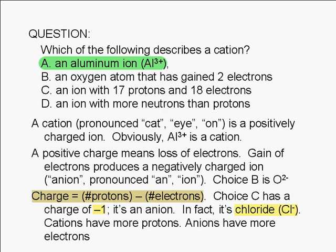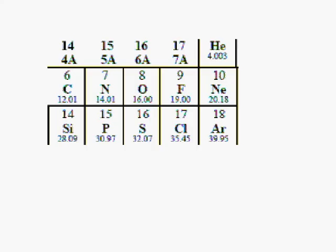If you're wondering how we figured out that choice C describes a chloride ion, here's how it's done. We refer to the periodic table. Here's chlorine. Its atomic number is 17.